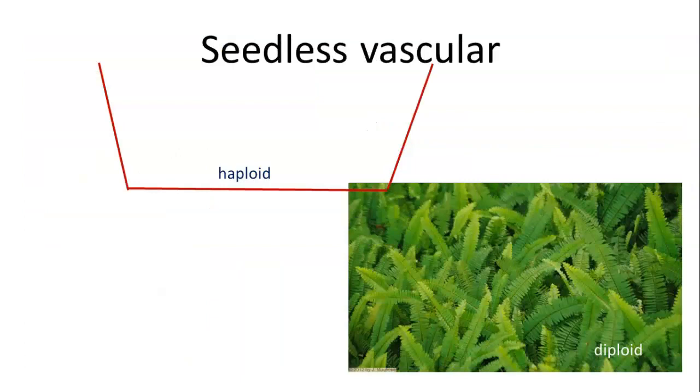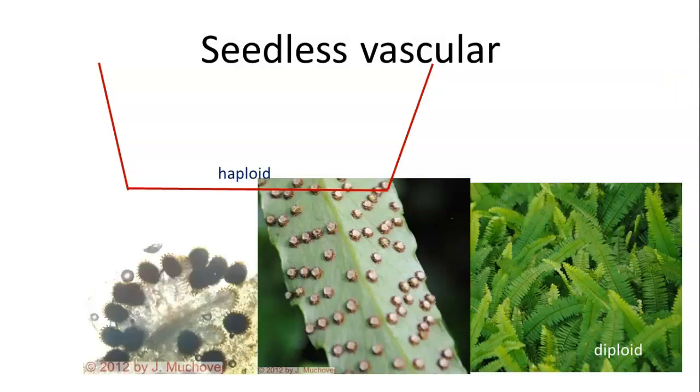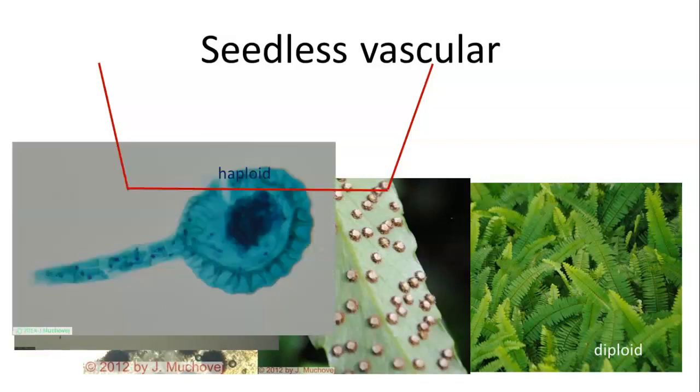If we look at seedless vascular plants, these are things like ferns. What we see is that part of the fern that we always see, and that's the diploid part, the sporophyte. If you look at the back of the leaf, you see these little things. We call them sori. Inside of those, you have these sporangia, and the sporangia produce little spores. If you were to take one of these leaves and cut it open, the little things on the inside are the spores, and the spores get released off.